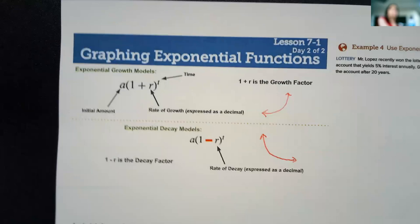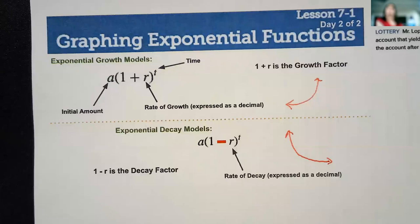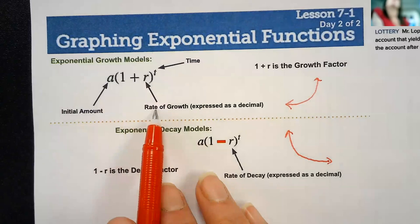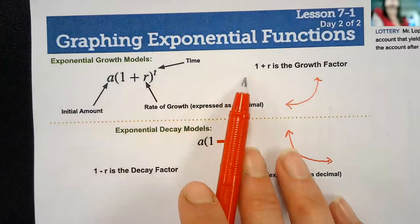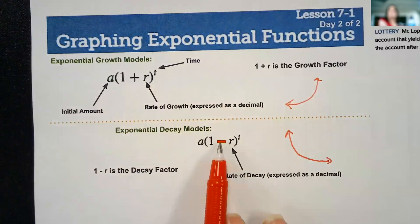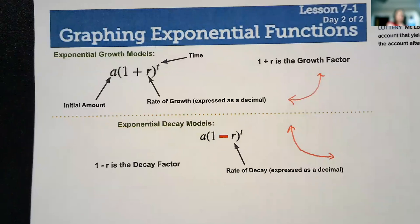Today, we're going to talk about the models that are presented with it, the application of it. So here's our formulas. You have the initial amount, A, times 1 plus R. That's the rate of growth expressed as a decimal, and then the time goes here. 1 plus R is the growth factor. Or the decay factor, if it's 1 minus R. If it's decaying, it's taking some percentage away.